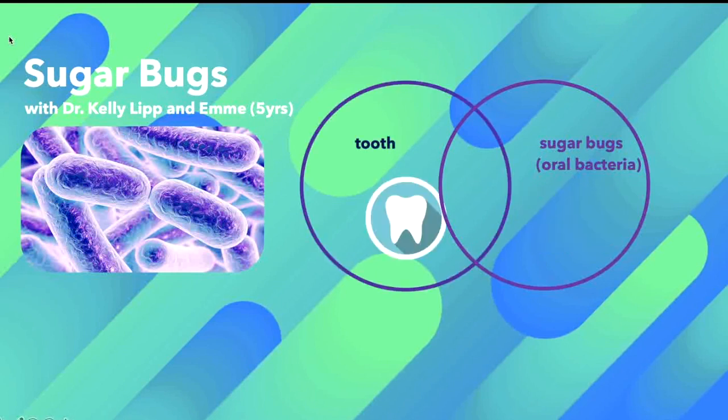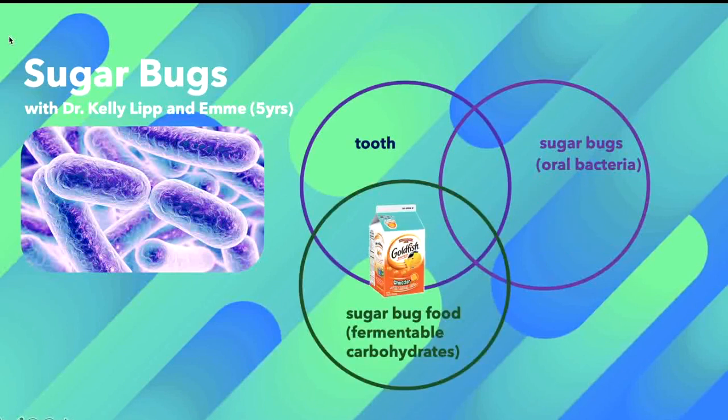Sugar bugs, of course, need a tooth. These sugar bugs also need sugar bug foods, which are also known as fermentable carbohydrates. Foods that sugar bugs like include anything with sugar in it, so candies, crackers, fruit snacks, and chips are great examples.